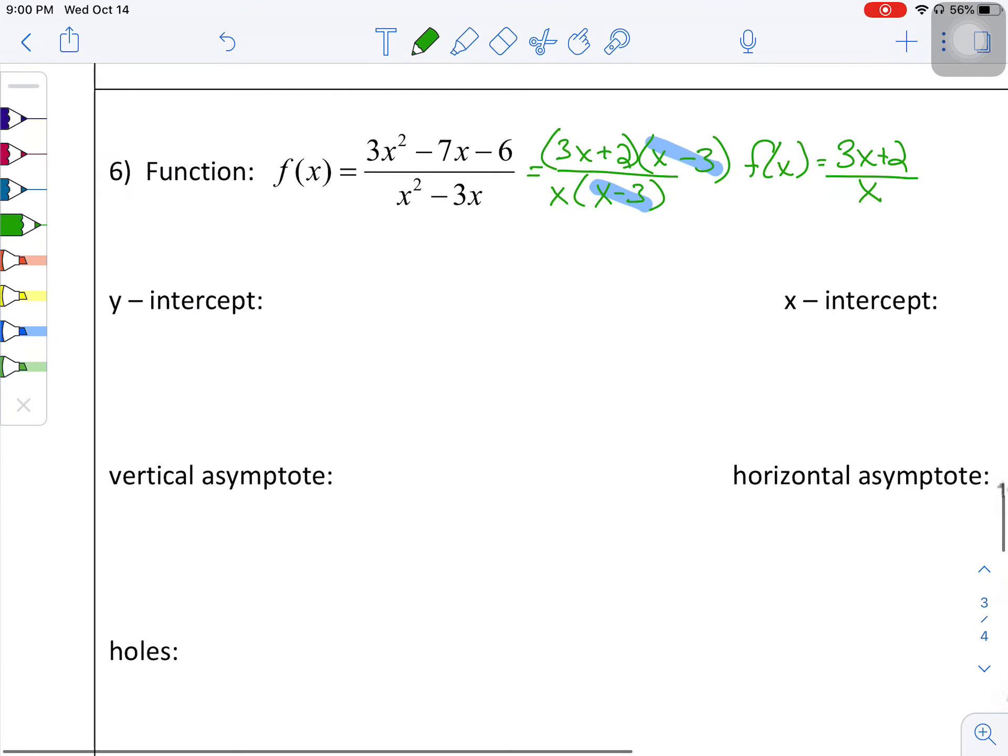Okay, so y-intercept, I'm going to make x equal to zero. So three times zero plus two over zero, none. All right, no y-intercept for you.